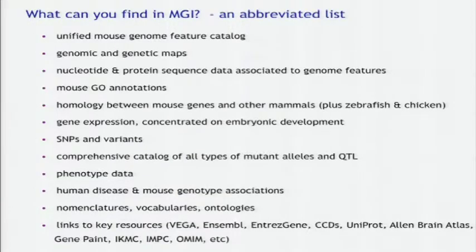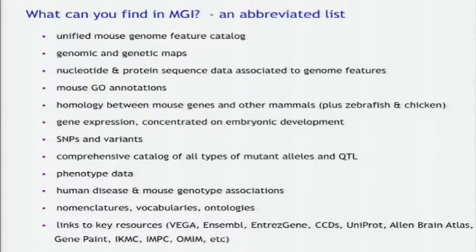What can you find? Genomic features, maps, nucleotide and protein sequences associated to those genome features, GO annotations, homologies, gene expression, SNPs and variants, catalog of mutant alleles and QTLs, phenotype data, mouse genotypes to human disease associations, vocabularies, and links to lots and lots of other relevant resources.